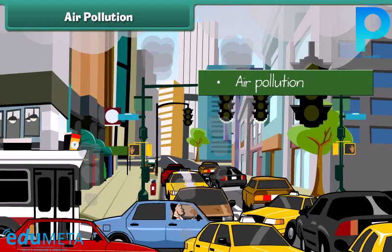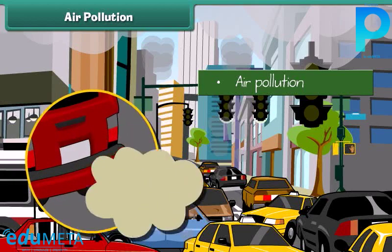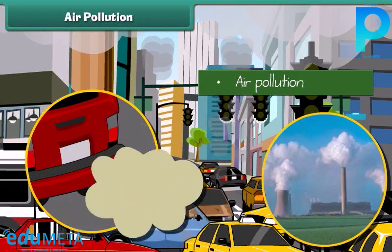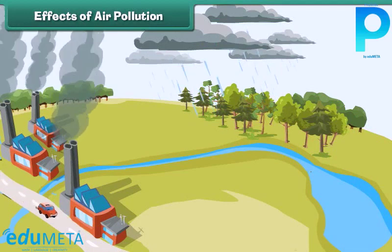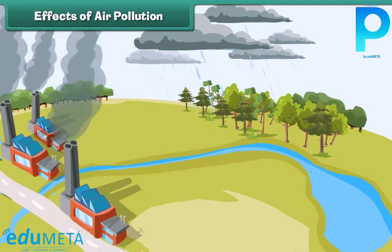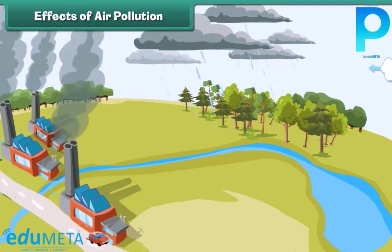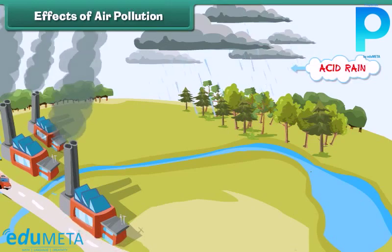Air gets polluted when unwanted substances — air pollutants — enter it. These substances come due to burning of fuels and emission of poisonous gases from industries. This polluted air mixes with clouds in the atmosphere and brings harmful rain, also known as acid rain.